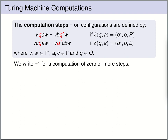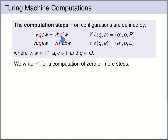The computation step relation for Turing machines is defined as a relation on configurations, denoted by the turnstile symbol. We have a step from configuration vqaw: if the state is q and we read letter a, and the transition function gives delta(q, a) = (q', b, R), then the state switches to q', the a is overwritten by b, and we move one to the right — the head was left of a and is now right of b.